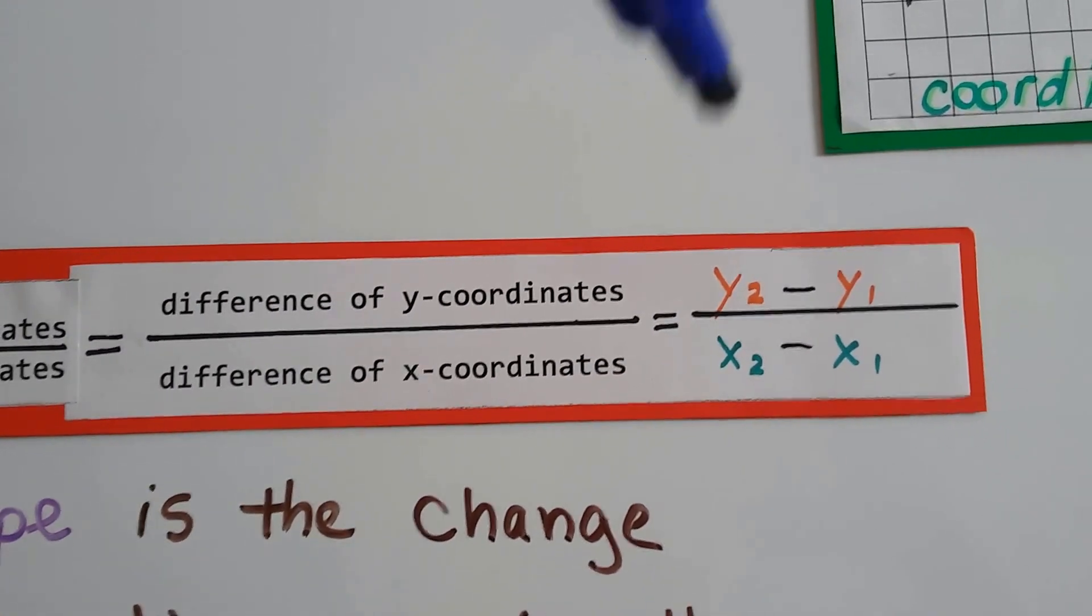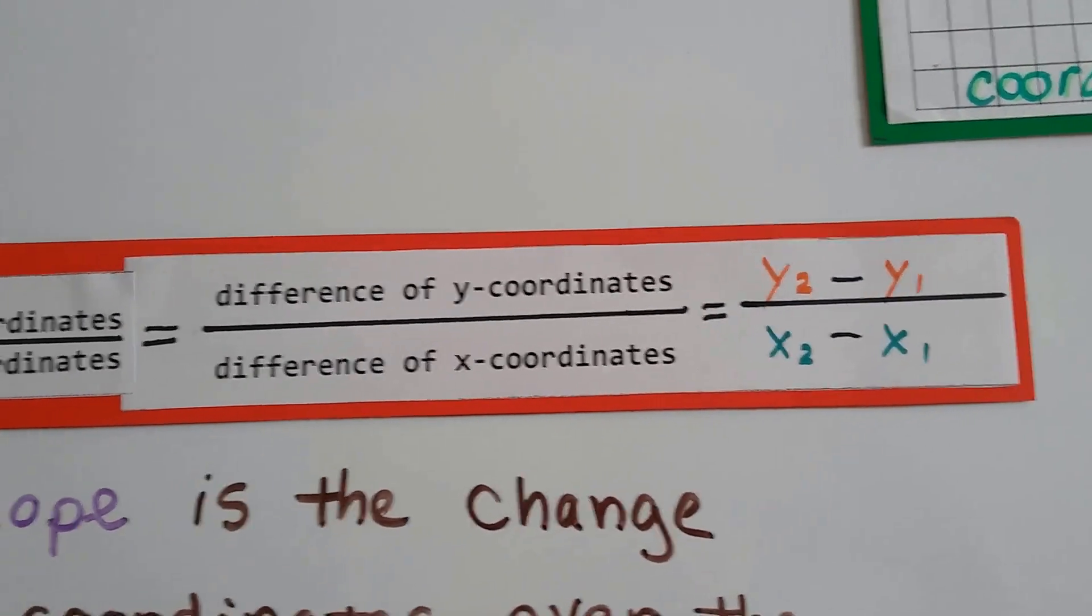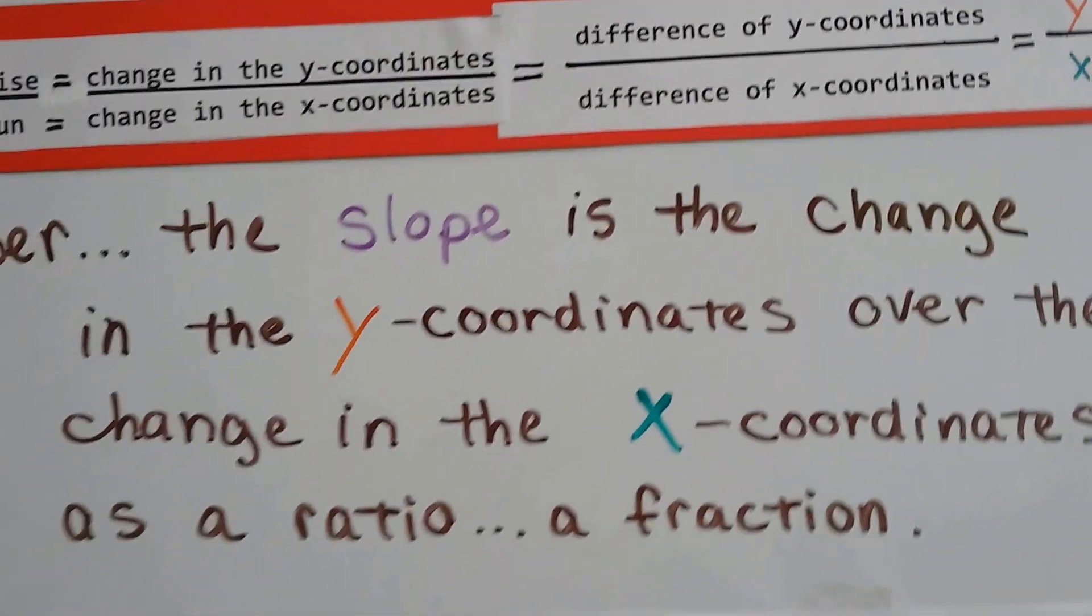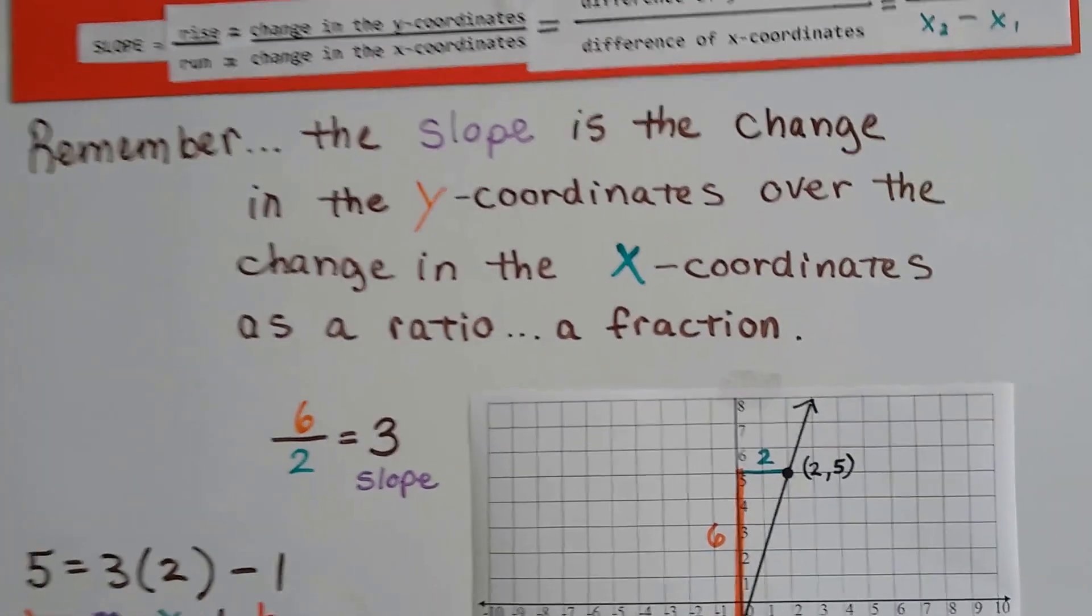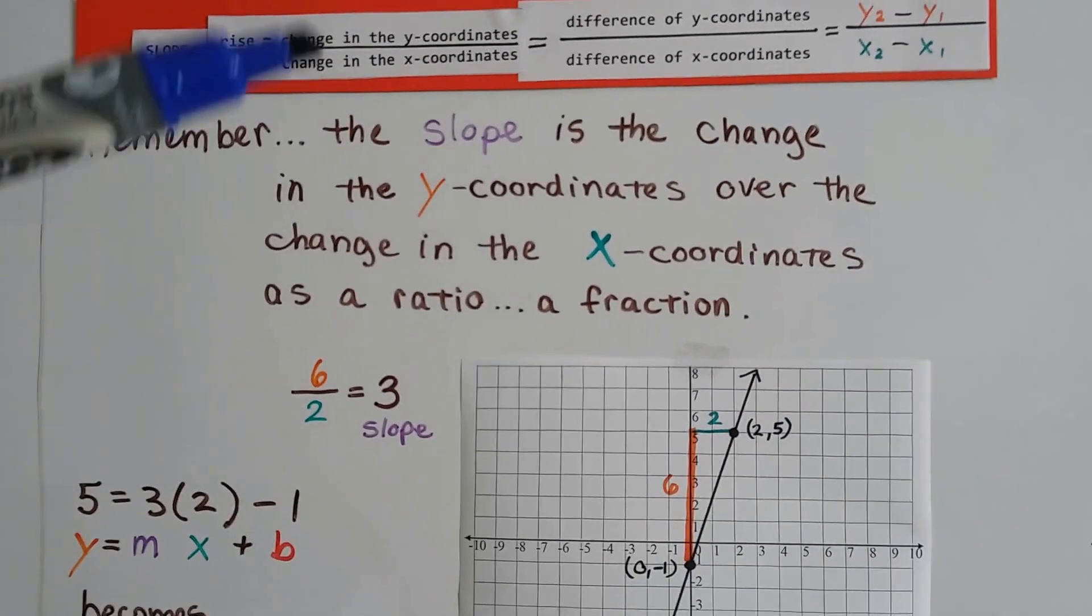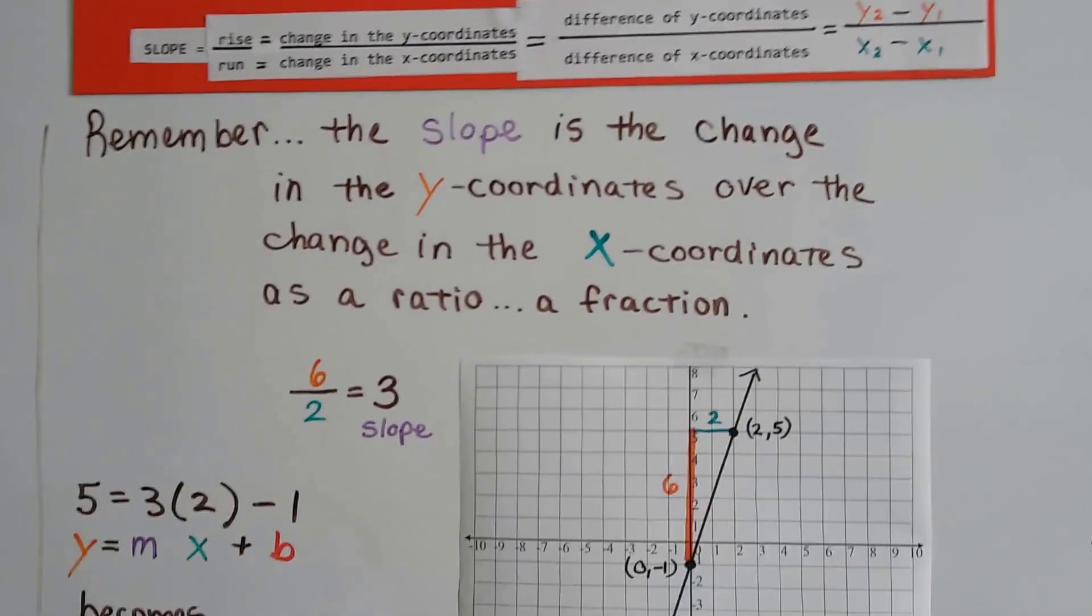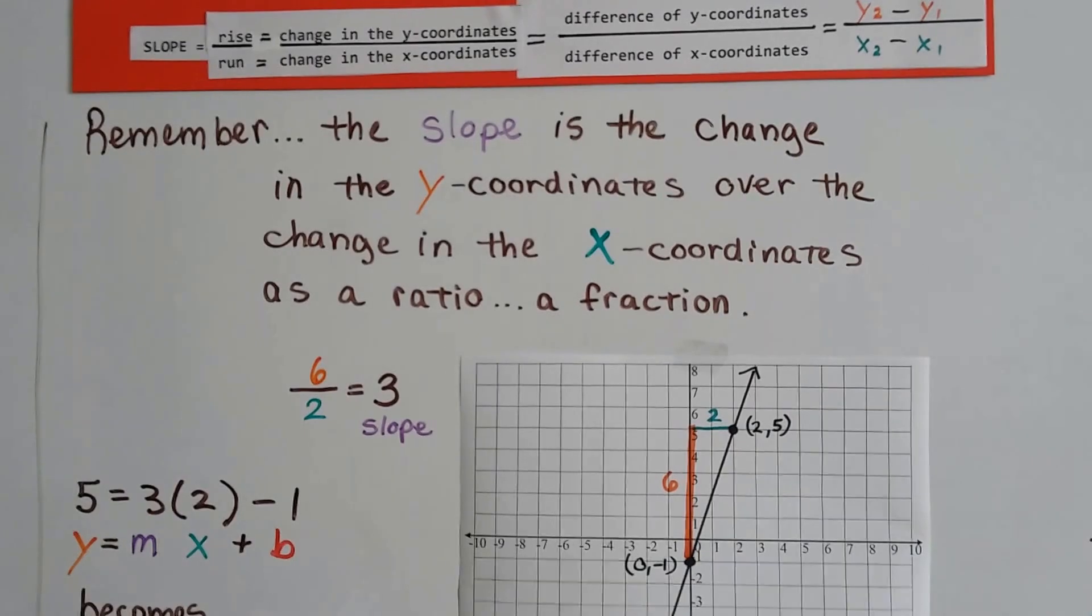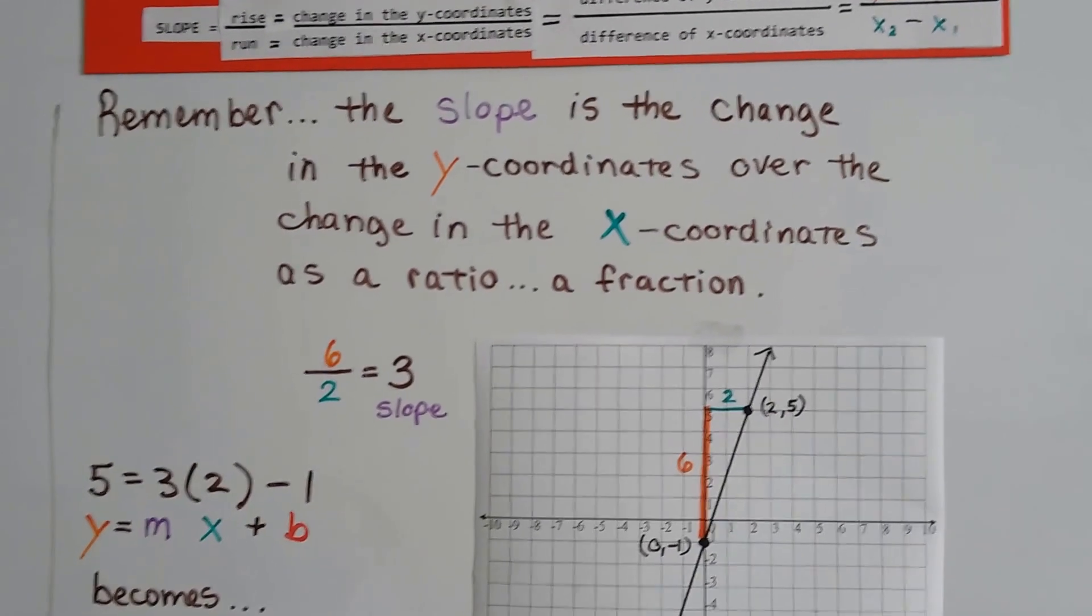So it would be y2 take away y1 over x2 take away x1. And remember, if we can remember this, that's going to help us. The slope is the change in the y-coordinates over the change in the x-coordinates as a ratio, as a fraction.